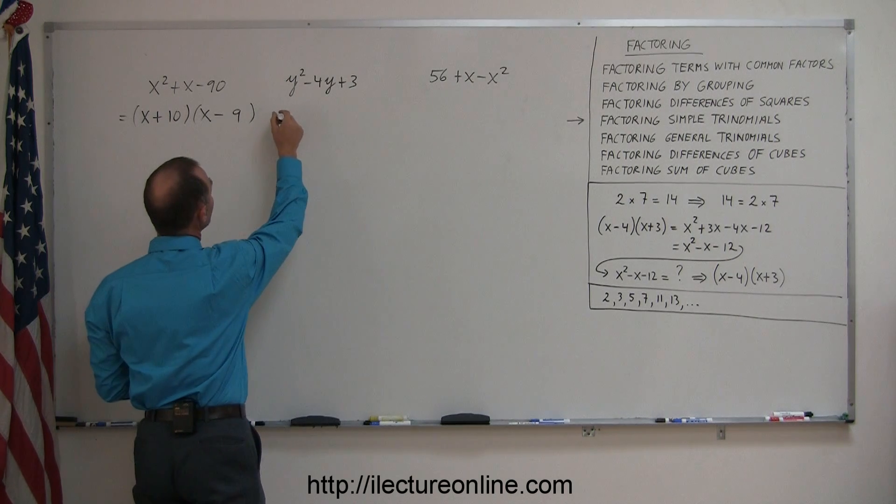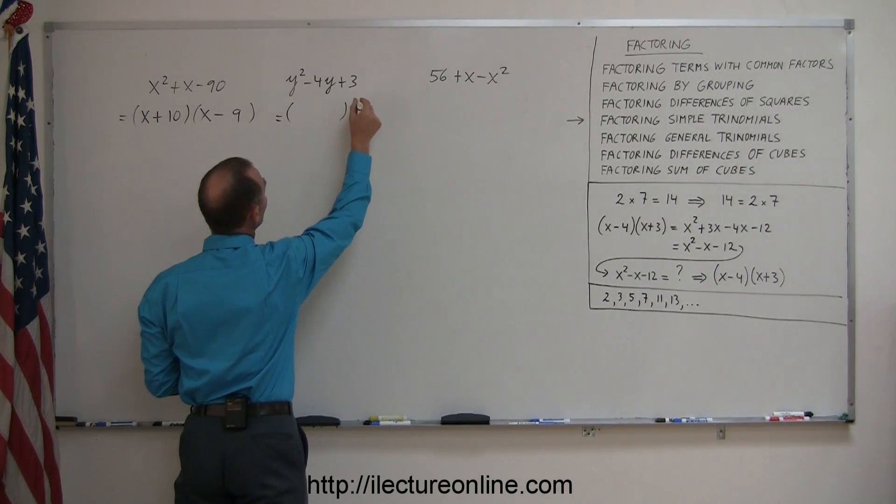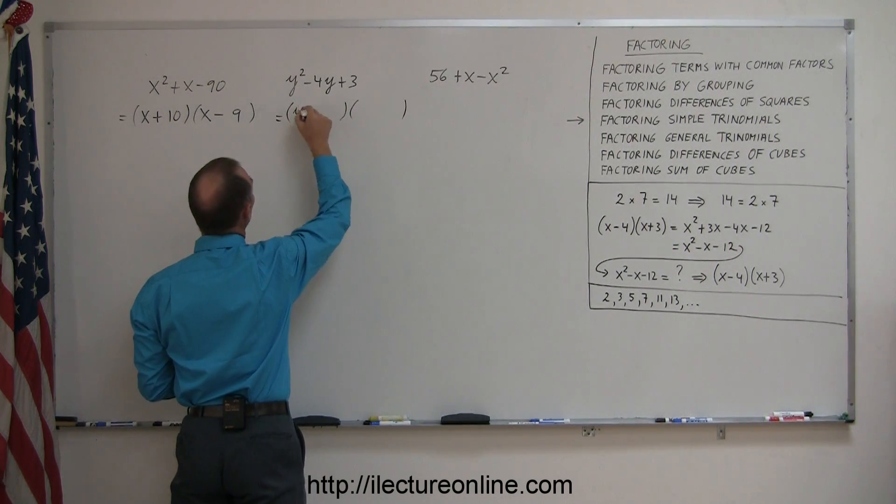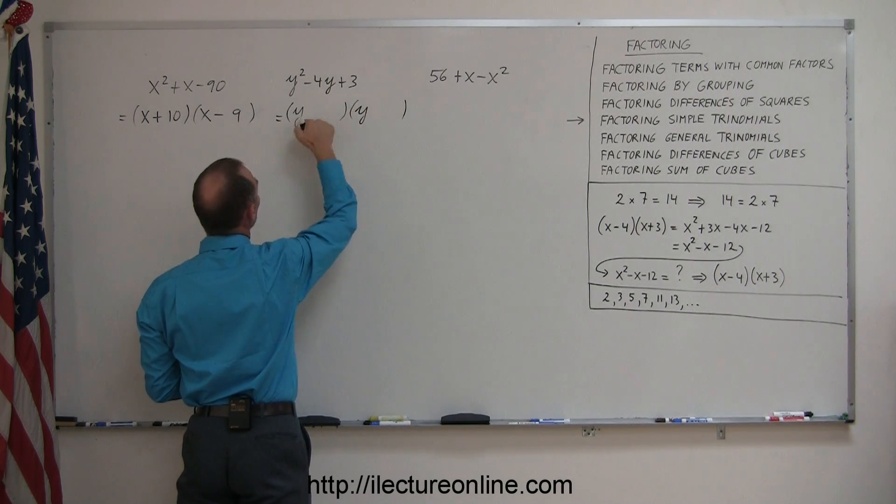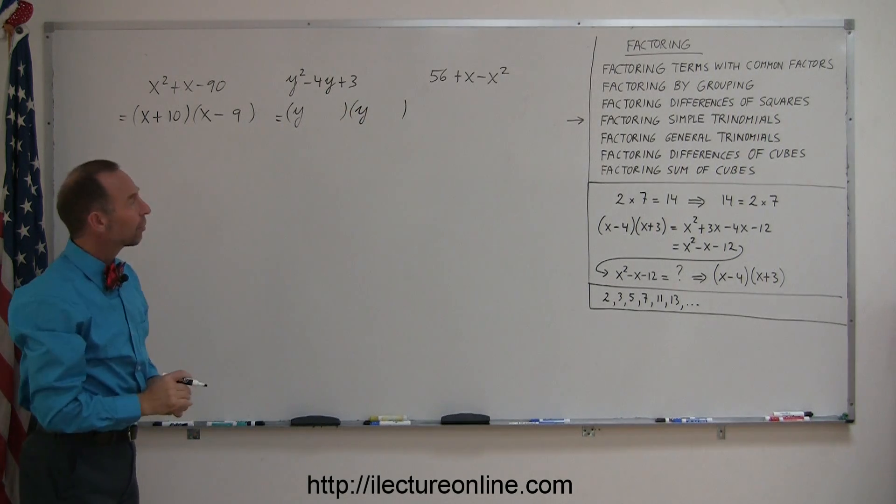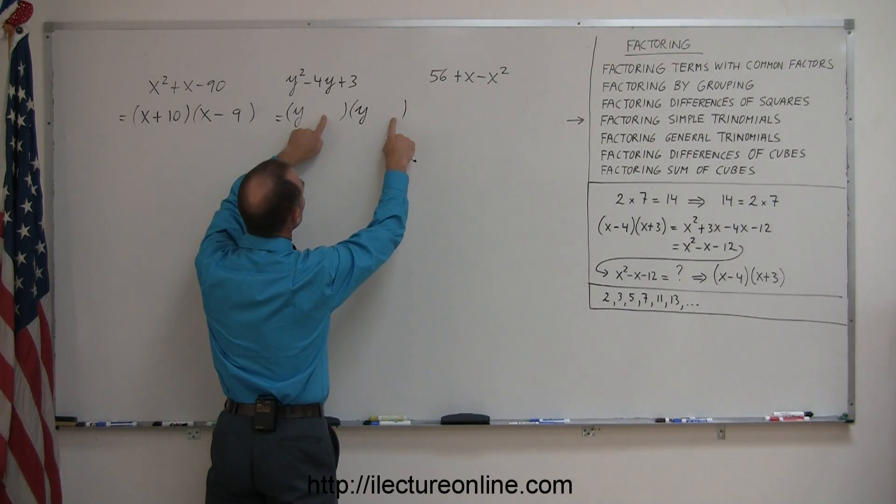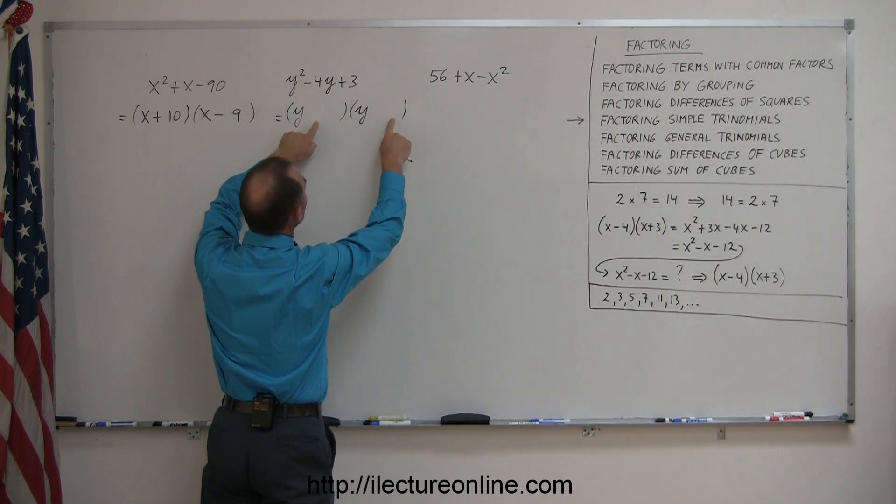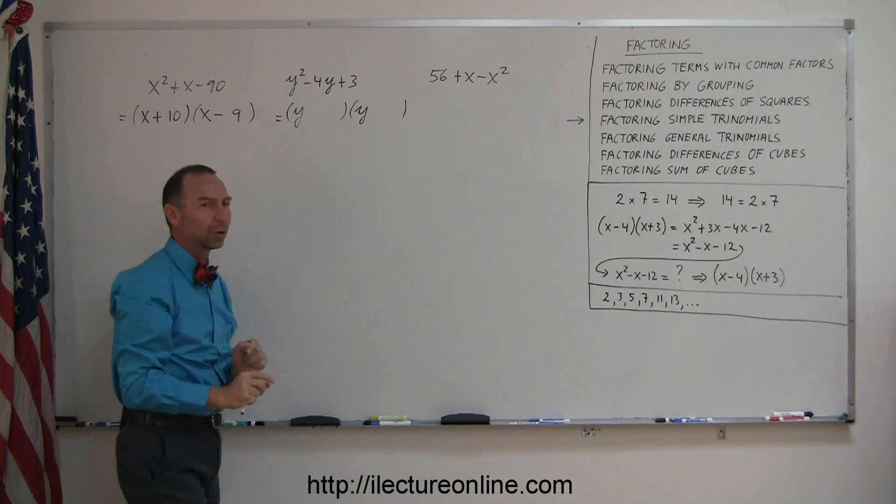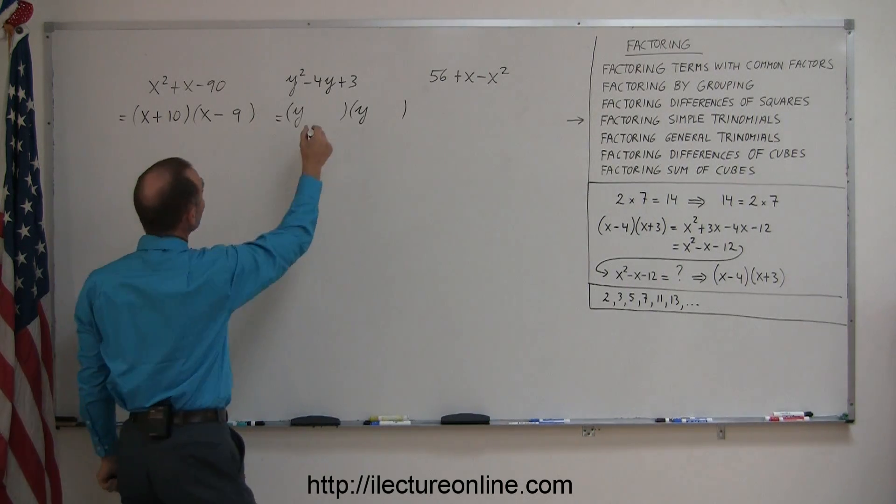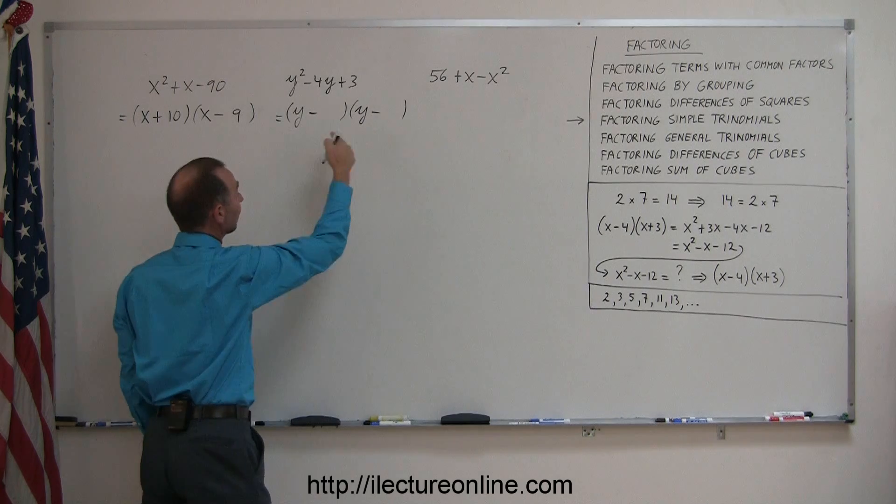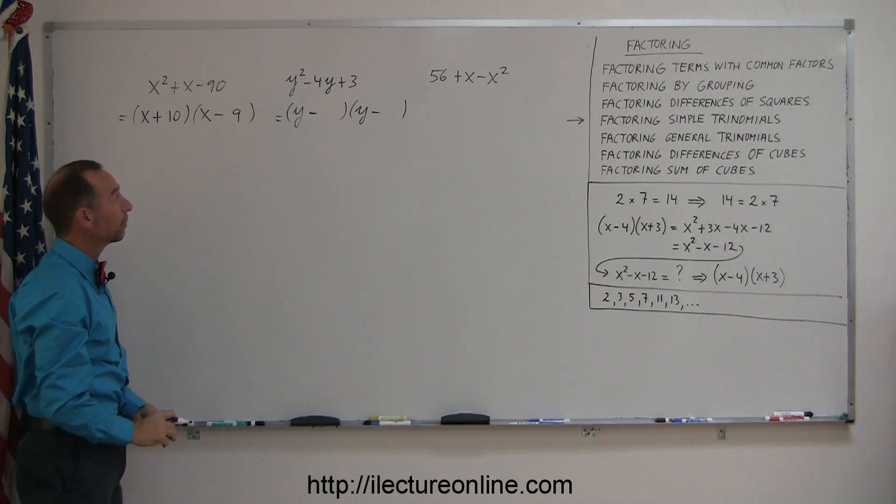Looking at the next one, again you're going to need two sets of parentheses. You're going to need a y and a y, because y times y gives you y squared. As far as the signs are concerned, when you multiply these two together you get a positive number, but when you add them together you get a negative number. And the only way that can happen is if they're both negative, because negative times a negative will give you a positive, and they add together to give you a negative number.